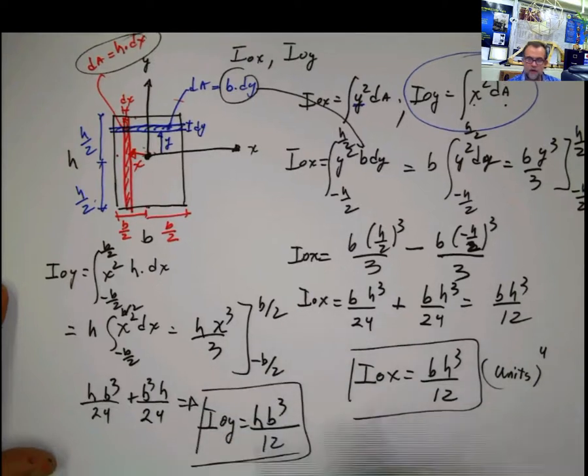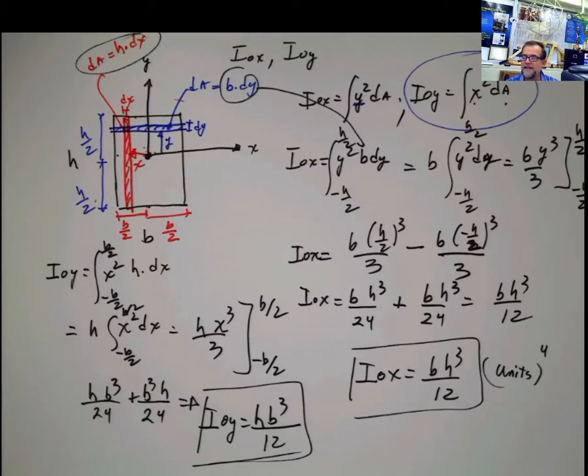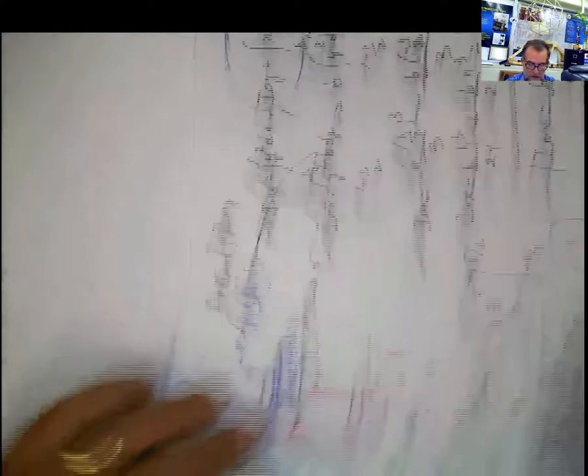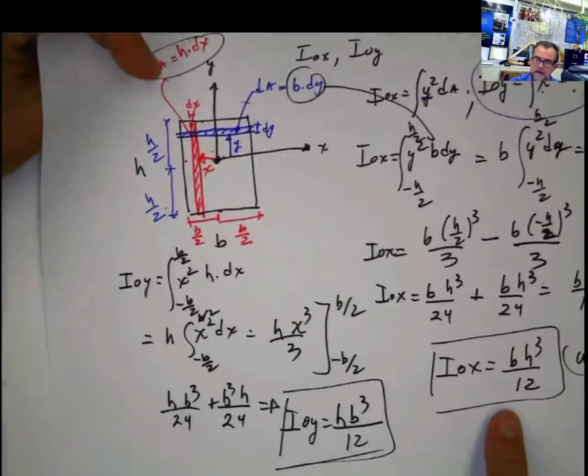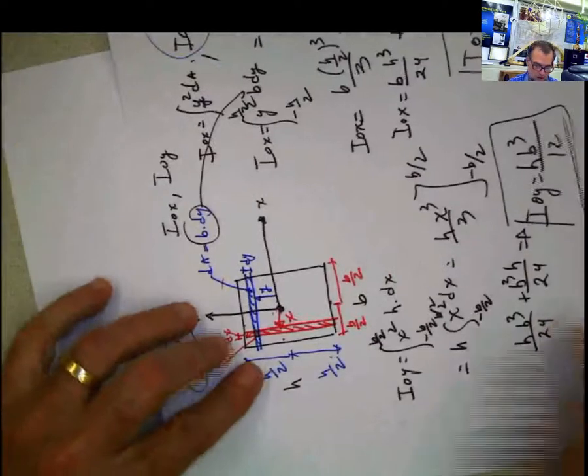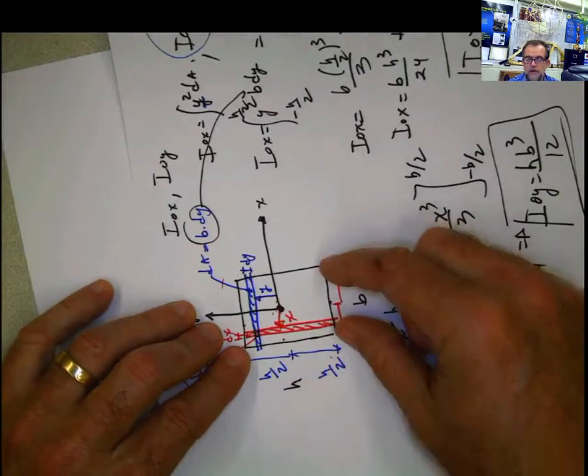Now, compare these two values with respect to x and with respect to y. Basically, the only thing that we need is getting this set of axes and rotating it like that. Because if I apply the same formula that I have here, bh cubed divided by 12, and now I just rotate my figure, h becomes b and b becomes h. So it would be h, b to the third, divided by 12.